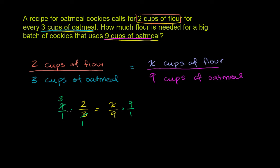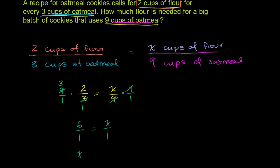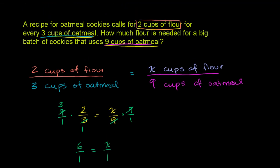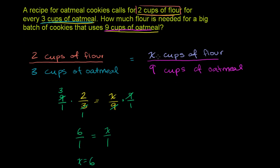So the left side of the equation is three times two over one, which is six over one. The nine in the numerator and nine in the denominator cancel out, so that equals x over one. Six over one is the same thing as six, and x over one is the same thing as x. So x is equal to six — if the recipe calls for two cups of flour for every three cups of oatmeal, that means we need six cups of flour for every nine cups of oatmeal.